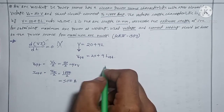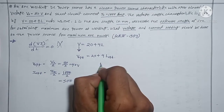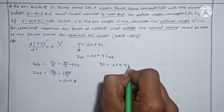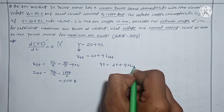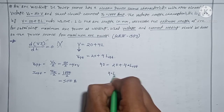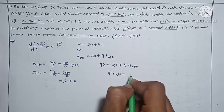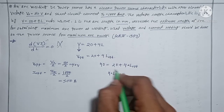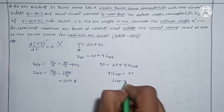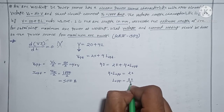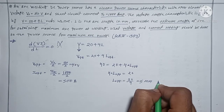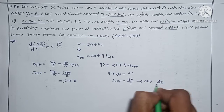Now substituting into the arc length characteristic: optimum voltage 40 = 20 + 4 × optimum arc length. So 4 × L_opt = 40 − 20 = 20, giving L_opt = 20/4 = 5 mm. This is your answer.